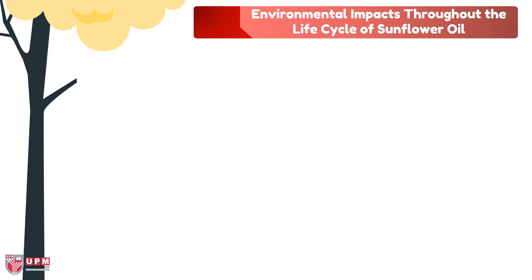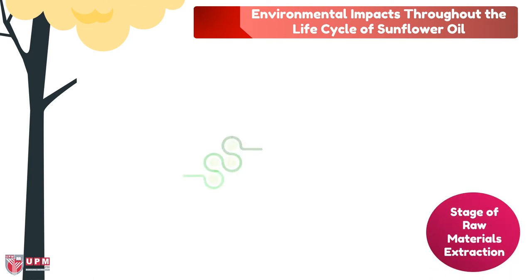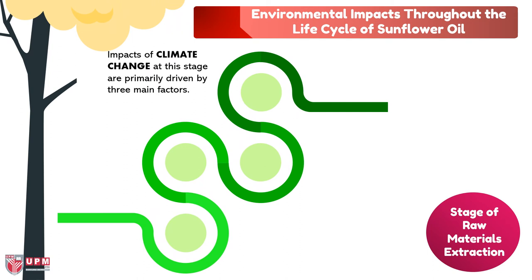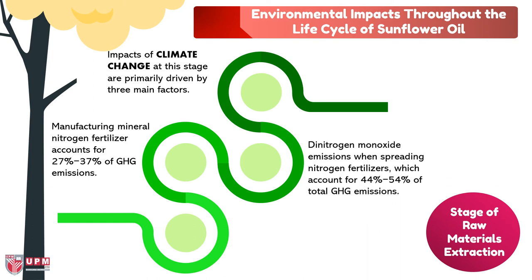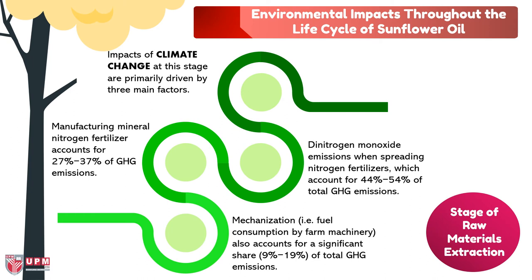There are several environmental impacts throughout the life cycle of sunflower oil. At the raw materials extraction stage, climate change impacts are driven by three main factors: manufacturing mineral nitrogen fertilizer accounts for 27–37 percent of greenhouse gas emissions; nitrogen monoxide emissions from spreading nitrogen fertilizer account for 44–54 percent; and mechanization such as fuel consumption by farm machinery accounts for 9–19 percent of total greenhouse gas emissions.